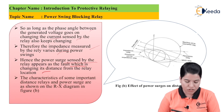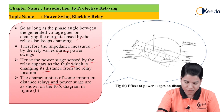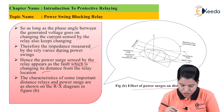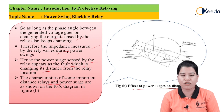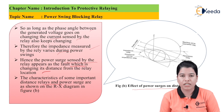Let us consider the characteristic of some important distance relays and the power surges shown on the R-X diagram in figure B. The figure shows the effect of power surges on the distance relay. The distance relay characteristic is better represented on the R-X diagram, and the distance up to which the relay provides protection depends upon the radius of the R-X diagram circle. When the fault occurs within this radius the relay operates; if the fault goes beyond the radius, the relay remains inoperative.